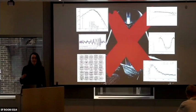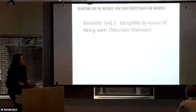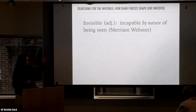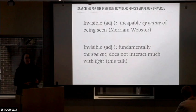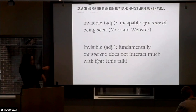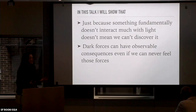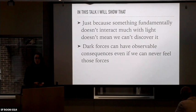We're using the scientific method, and because we want to make precise statements, let me be precise about my terms. Going back to the title: 'searching for the invisible.' Merriam-Webster defines invisible as something incapable by nature of being seen. For the purposes of this talk, invisible is going to mean something that is fundamentally transparent and does not interact very much with light. And I'm going to show you that just because something doesn't interact with light doesn't mean we can't discover it. We're living in the era of multi-messenger astronomy. Dark forces can have observable consequences on what we see, even if we can never directly feel or interact with those forces.